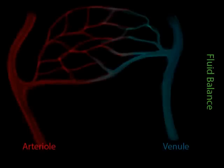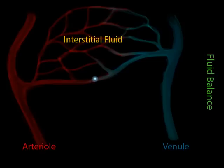From your understanding of the circulatory system, you know that blood passes through the arteries, arterioles, and then the capillaries. The capillary walls allow the fluid portion of the blood to exit the capillaries into the surrounding tissues. Once the fluid leaves the capillaries, it is called interstitial fluid.